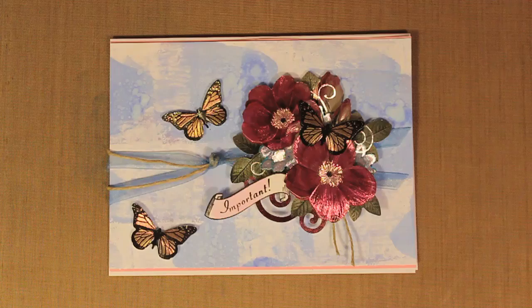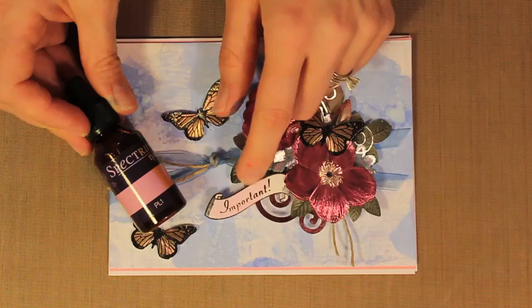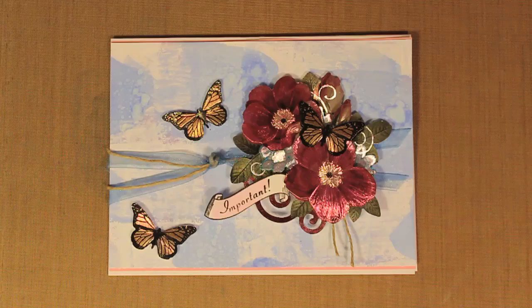Before I stamped that, I used a little bit of excess Neenah Classic Crest, and I did the same brayering technique using PL1, a really pretty soft pink. And it's, again, a pretty subtle effect, but I just brayed that onto that white cardstock and then stamped important using Jet Black Archival Ink from Ranger.